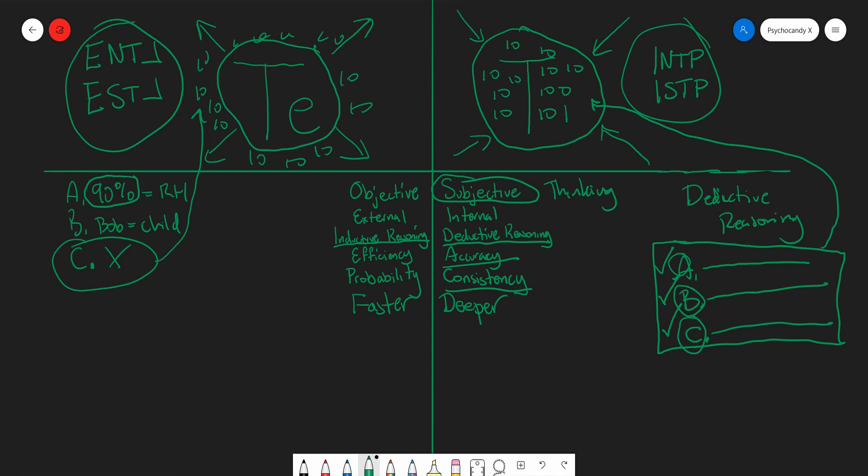Te deals with more efficiency, probability, statistics, facts, sources, and it's more willing to accept this conclusion even though it is not absolutely certain. And it'll have this, or at least Te doms will have this mindset of, I can accept this fact but I'll treat it as sort of like innocent until proven guilty. And they'll implement that fact any way they can in order to move forward, in order to be more productive, complete their tasks, achieve goals any way that they can.